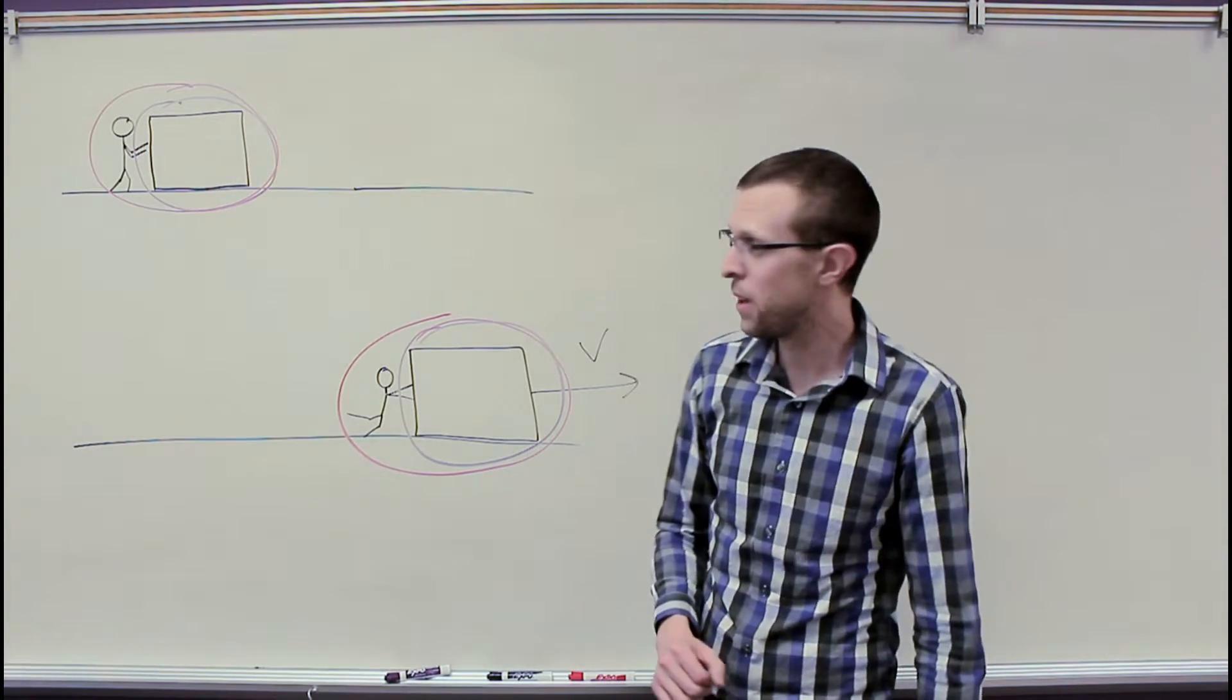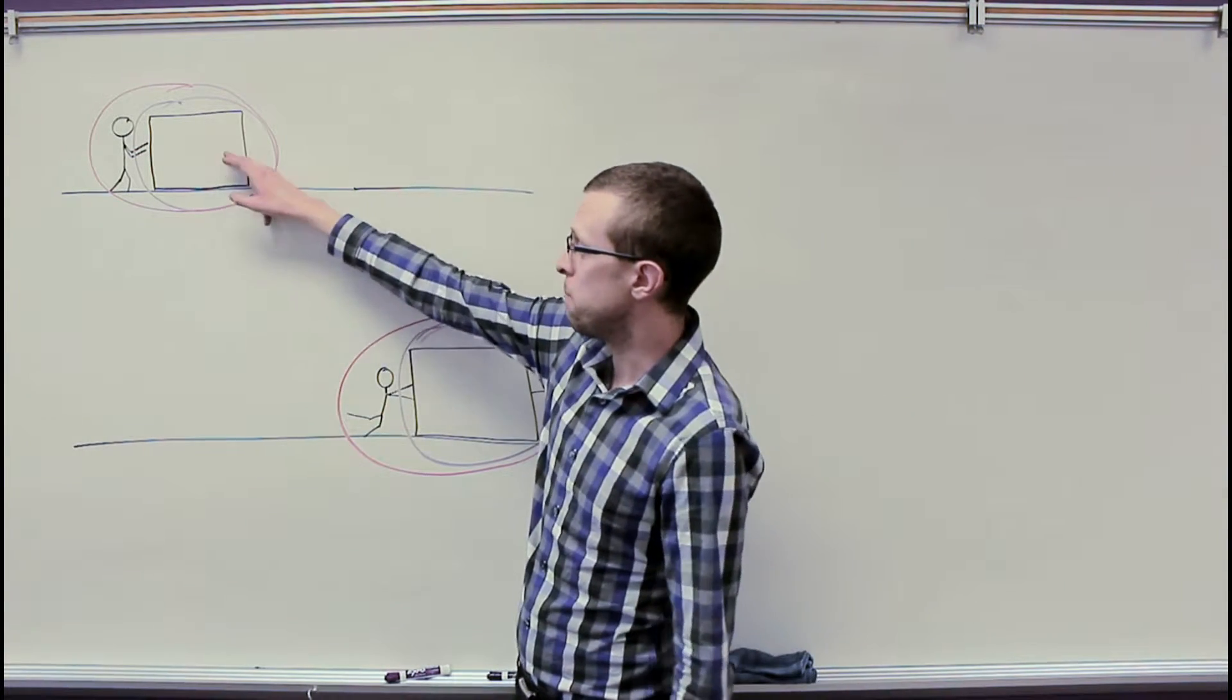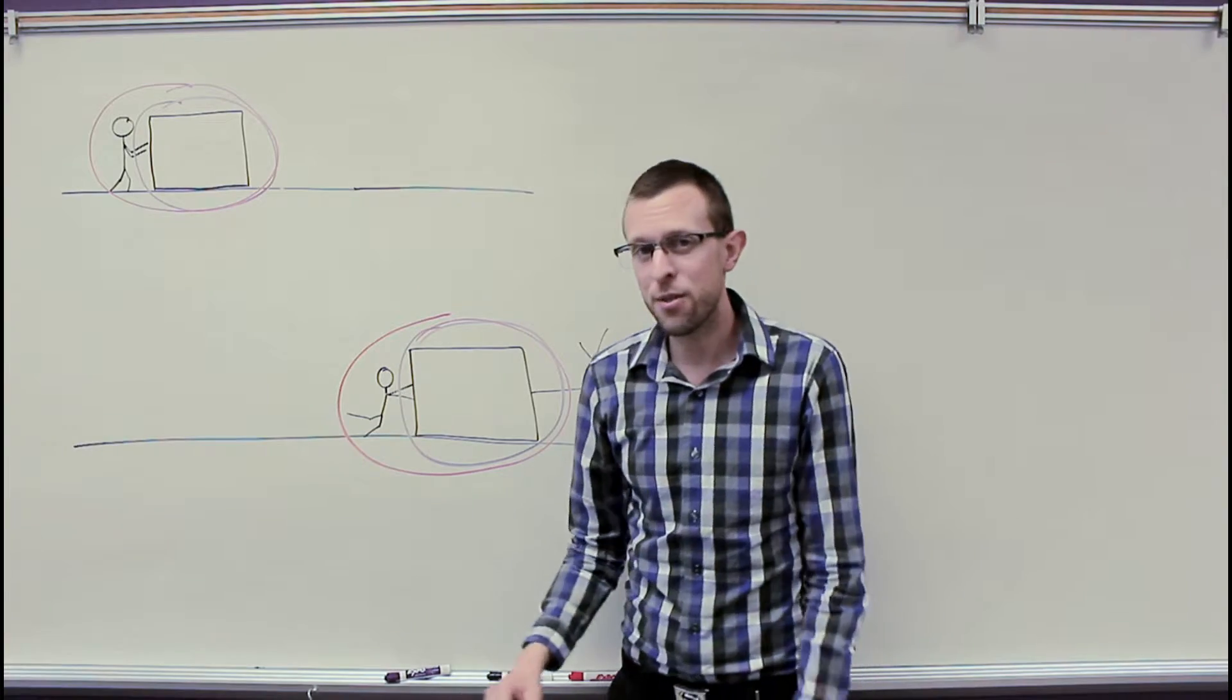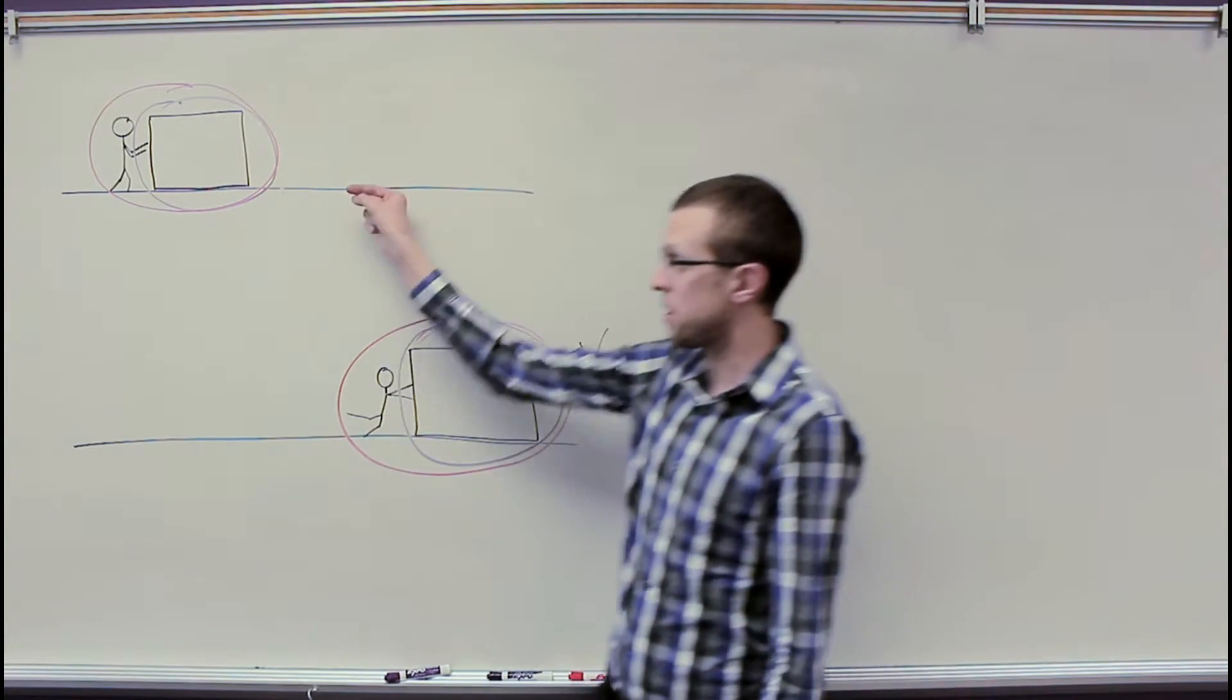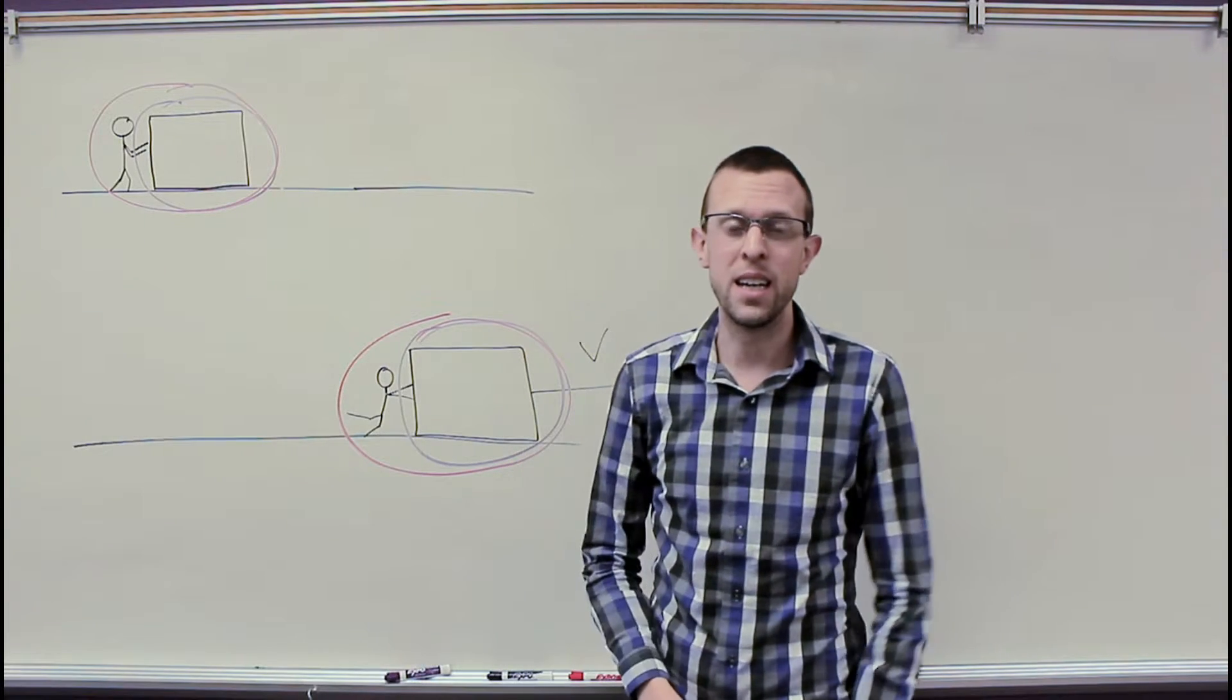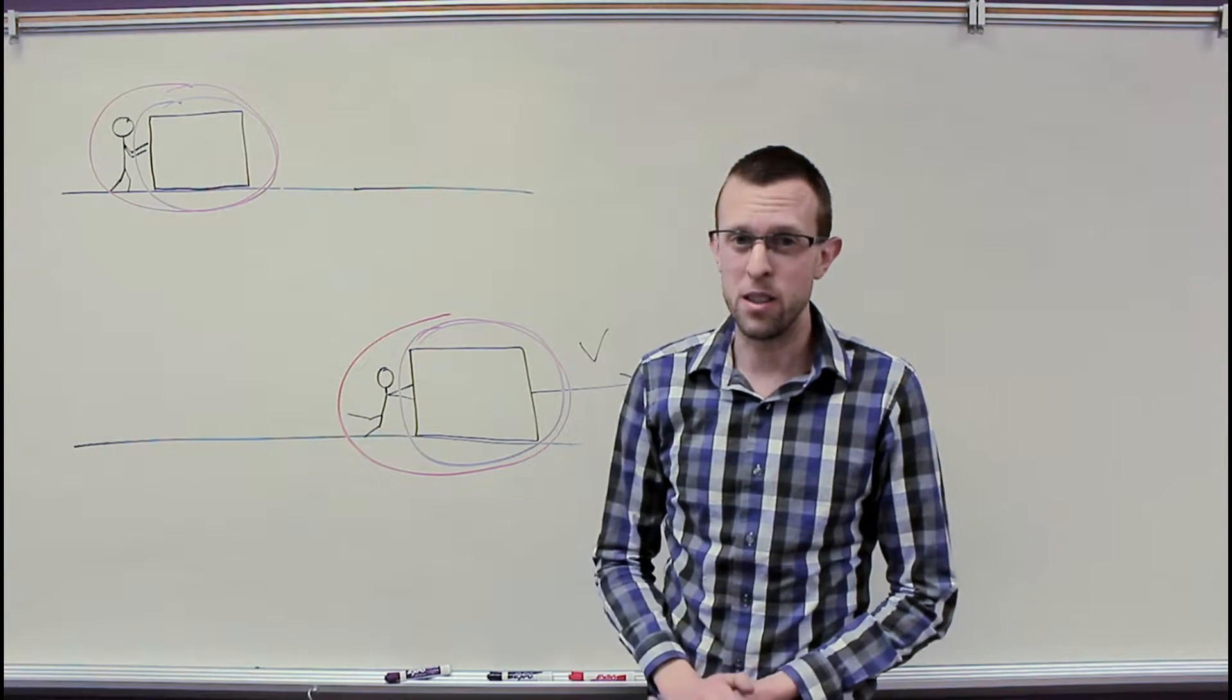Then we have the frictional force between the box and the floor, and that's trying to resist that sliding of the two surfaces past each other. So, that's acting opposite the direction of motion, and again, doing negative work on the system.